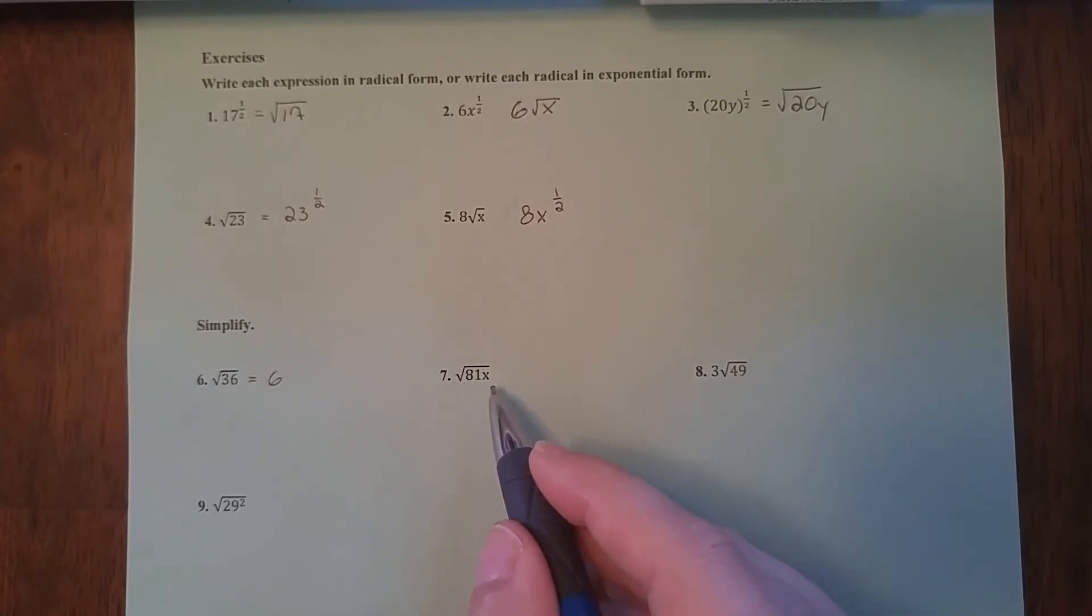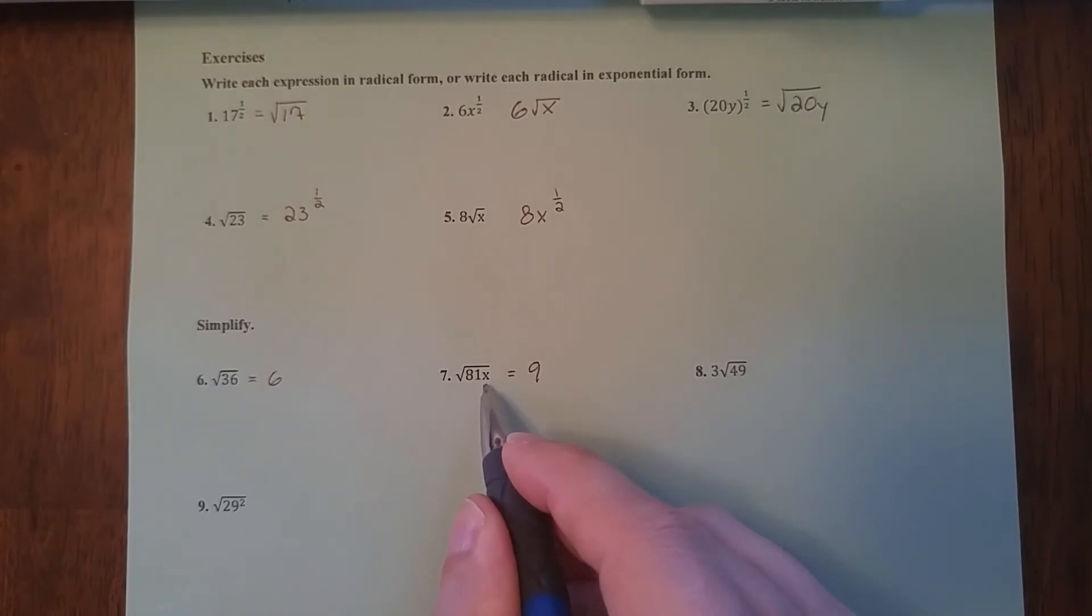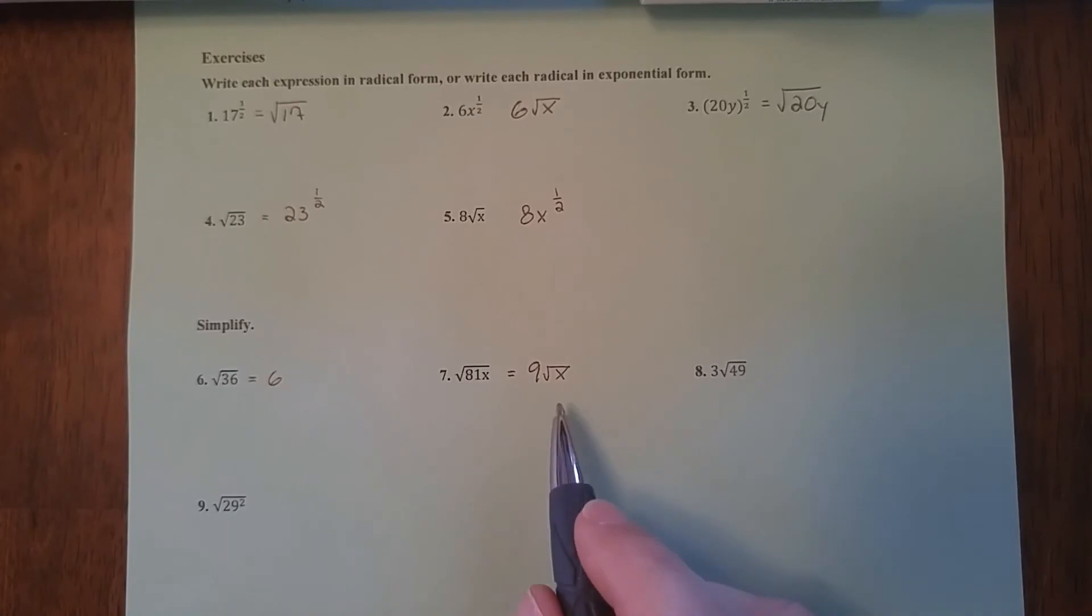Next, I have square root 81x. So I have the 81 and I have the x, and you can treat them separately. So first, let's look at the number. Is there something I can multiply by itself to get 81? And the answer is, yeah, it's 9. 9 times 9 is 81. So I can pull that 9 out of the radical. Now the question is, is there something I can multiply by itself to get x? Well, since x is a variable, I can't really answer that. So I'm going to leave that alone, and that's going to stay under the radical like that. So we get 9 root x is the answer.